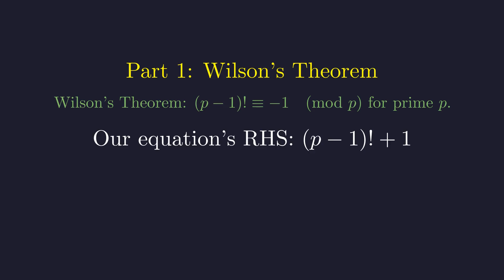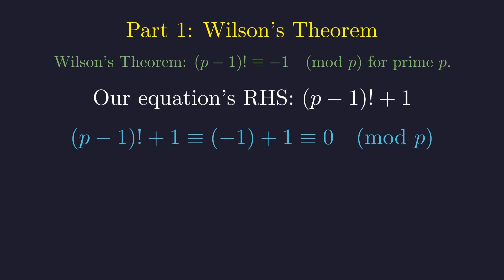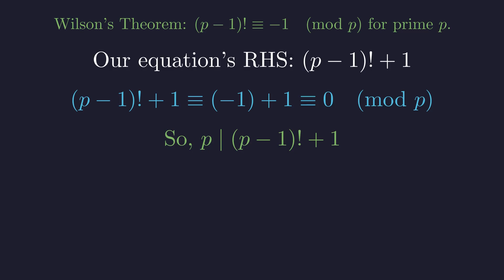Let's look at the right-hand side of our equation in light of this theorem. Applying Wilson's theorem, we see that the entire right-hand side is congruent to 0 modulo p. In other words, it's a multiple of p. This means p is a divisor of (p-1) factorial plus 1. This is a crucial first step.